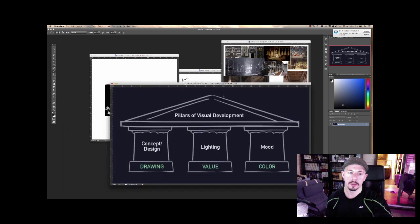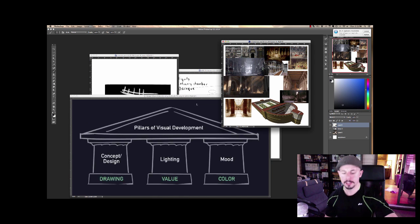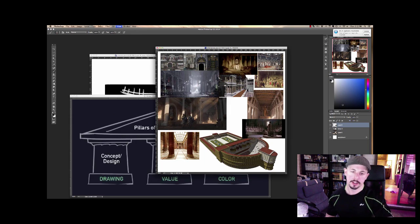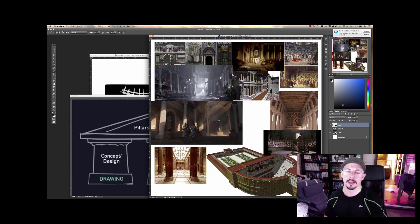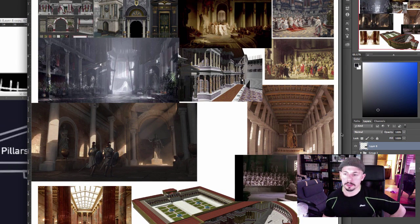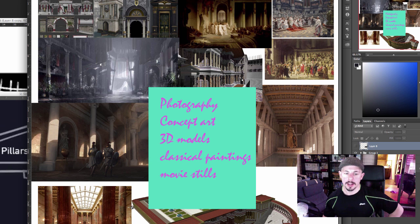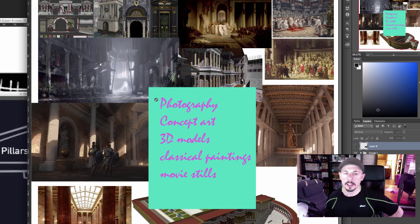I can break these down with a few examples. For this scene I had to sketch an imperial, Roman senate-type image. Here's some of the reference I gathered — photography, existing concept art, classical paintings, movie stills, and even 3D models, just so I can fully understand my setting. Nothing's off the table when it comes to getting the job done.